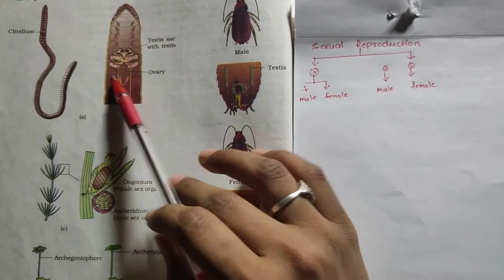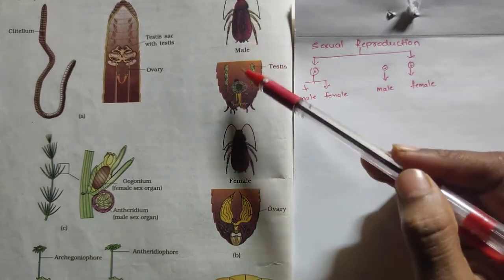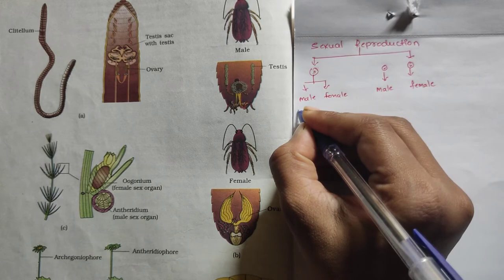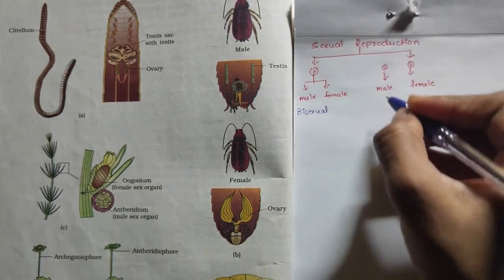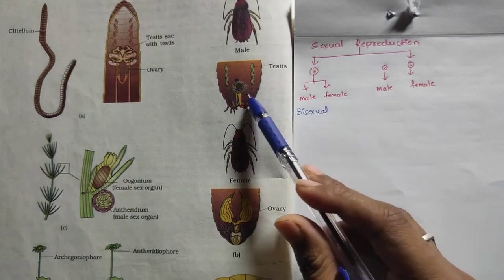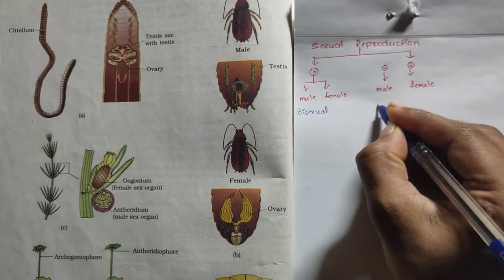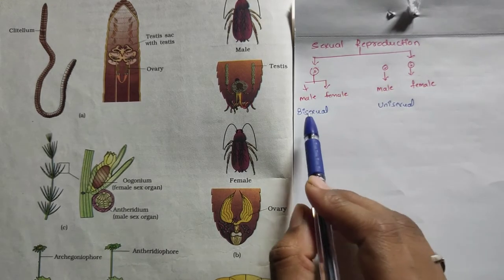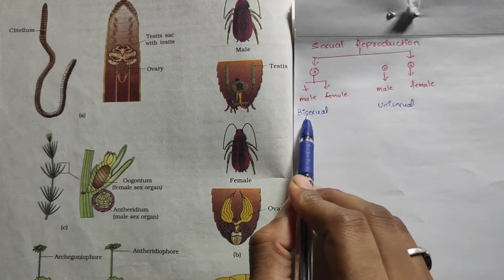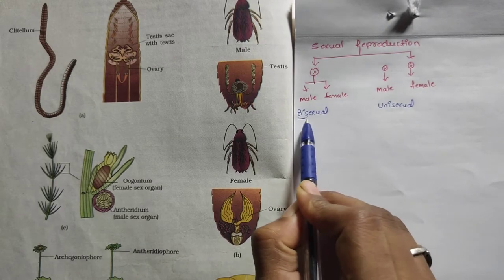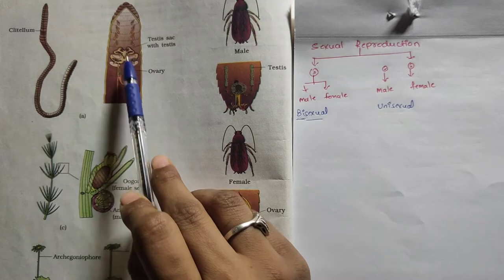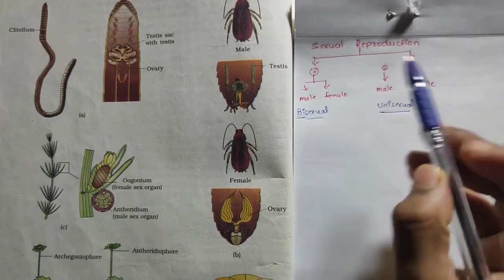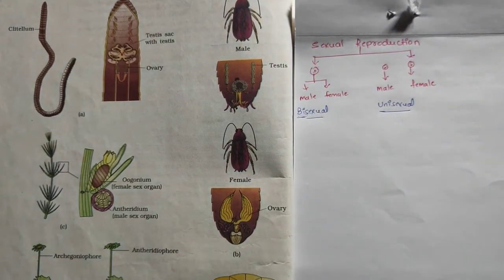In the earthworm, both testis and ovary are produced within the same individual. In cockroach, the male has testes and the female has ovaries — these are different individuals. An animal that produces both male and female gametes within one individual is called a bisexual animal. An individual producing only one type of gamete is called a unisexual animal. The term 'bisexual' means two sexes are present in the same individual, while 'unisexual' means one sex per organism.